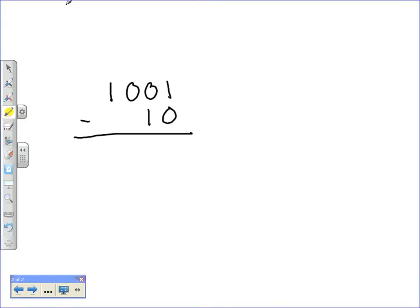Let's do another example and a simpler one just so we can make sure that what we're doing makes sense. So if we have, starting at the right, 1 minus 0, we know that that's 1. And again, we go to the next column, 0 minus 1, we're going to have to borrow from here.